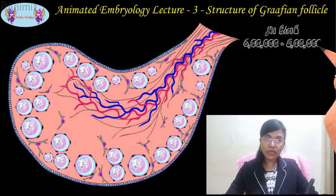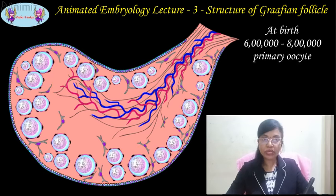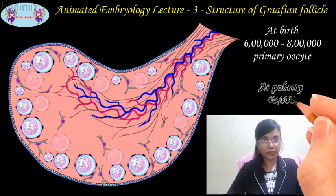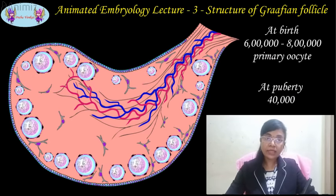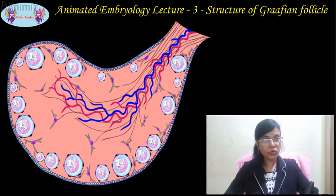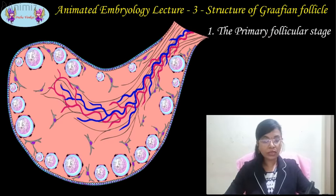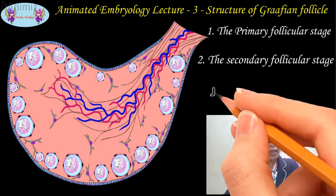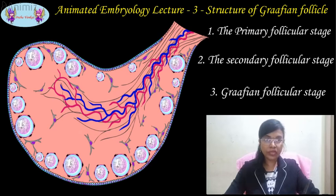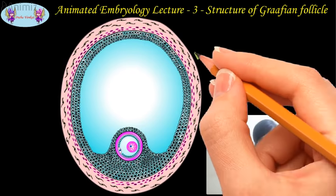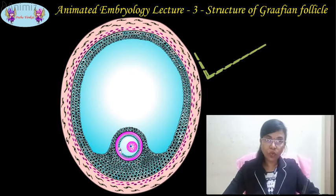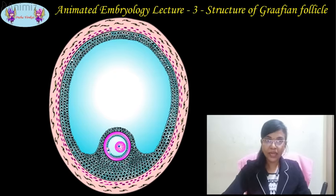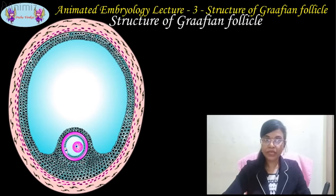At birth, the ovaries contain around 6 to 8 lakhs of primary oocytes, and the number reduces to 40,000. The primary follicles must pass through the primary follicle stage, the secondary follicle stage, and the Graafian follicle stage to be converted into a mature oocyte. Each structure present in the Graafian follicle has its own role in the developmental process. Now let's see the structure of a Graafian follicle.